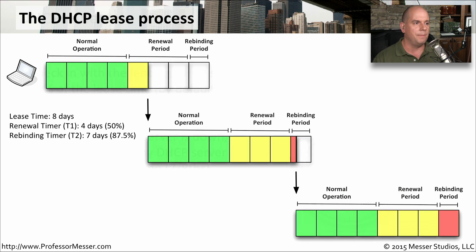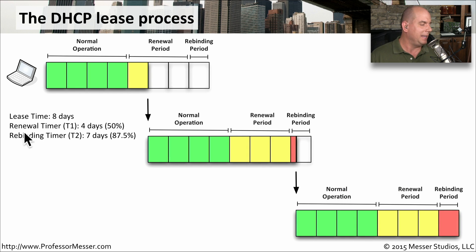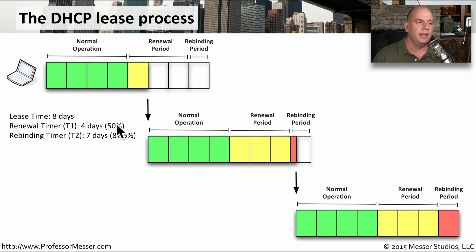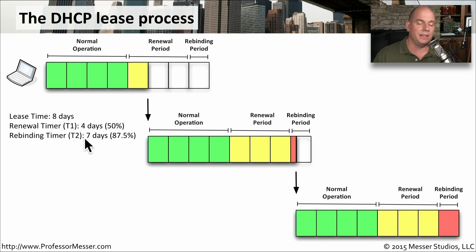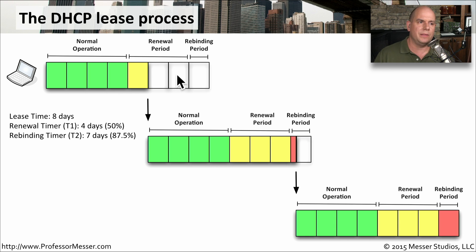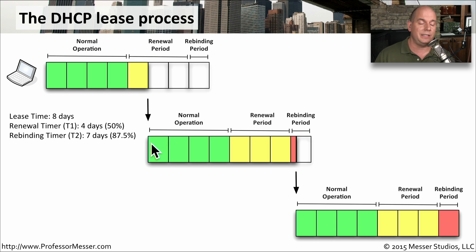Visually, we can see it this way. Let's say we've been given a lease time of eight days. The T1 timer is going to be four days — that's 50% of the time. The T2 timer is going to be seven-eighths of the lease time, or seven days. So during normal operation, when we hit 50% we enter a renewal period where we need to check back in. If the DHCP server is available, we check back in, renew the lease timer, and our T1 is reset back to zero.